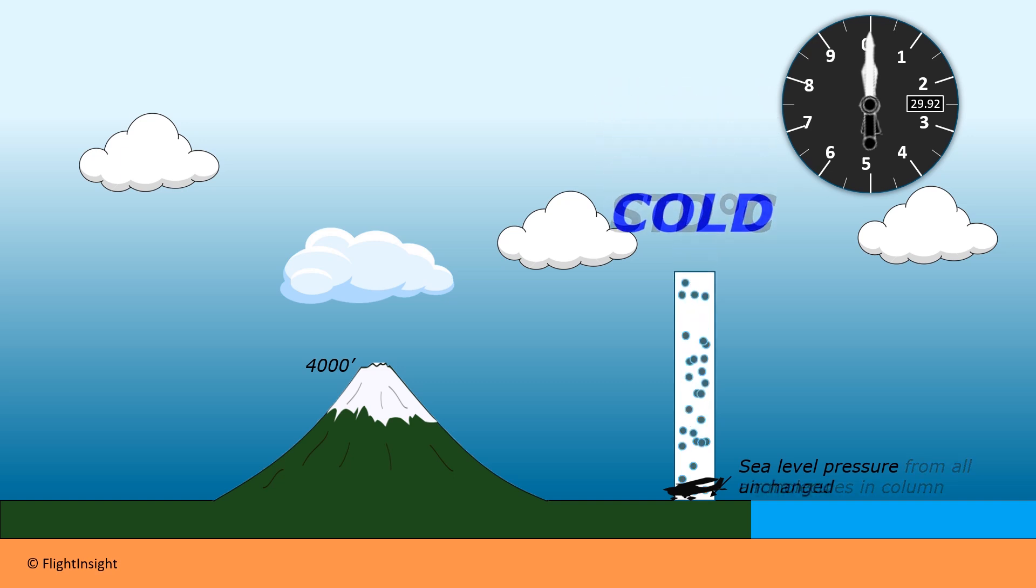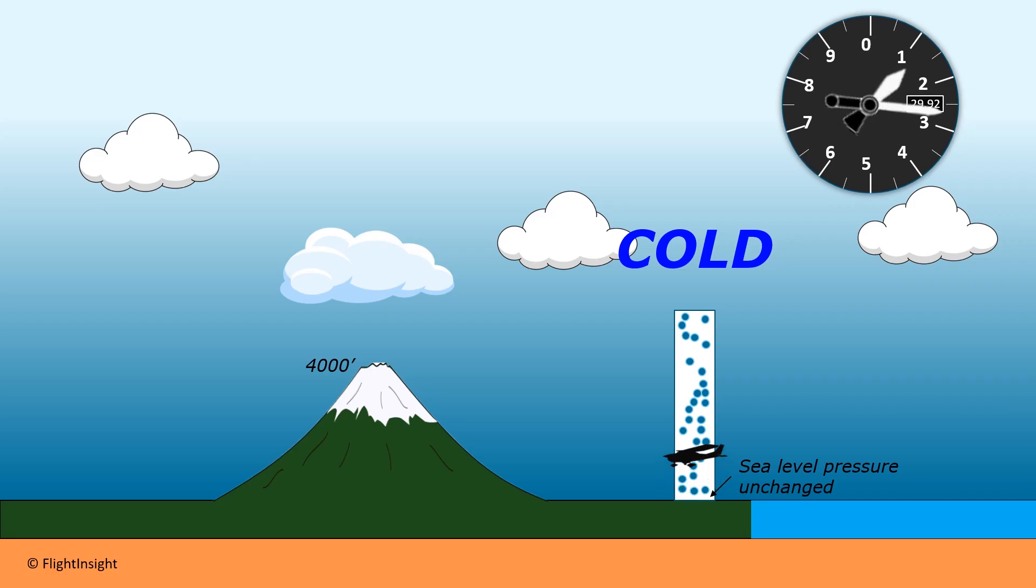When the temperature is colder than standard, that column of air becomes more condensed. It's important to note that this doesn't change sea level pressure. There's still the same mass of air above us, so a properly set altimeter will read zero MSL. But when we climb, we get to a true altitude of 4,000 again, but with fewer air molecules now above us than when we were at standard, the altimeter thinks we're higher up in thinner air, even if it's set to the correct altimeter setting.